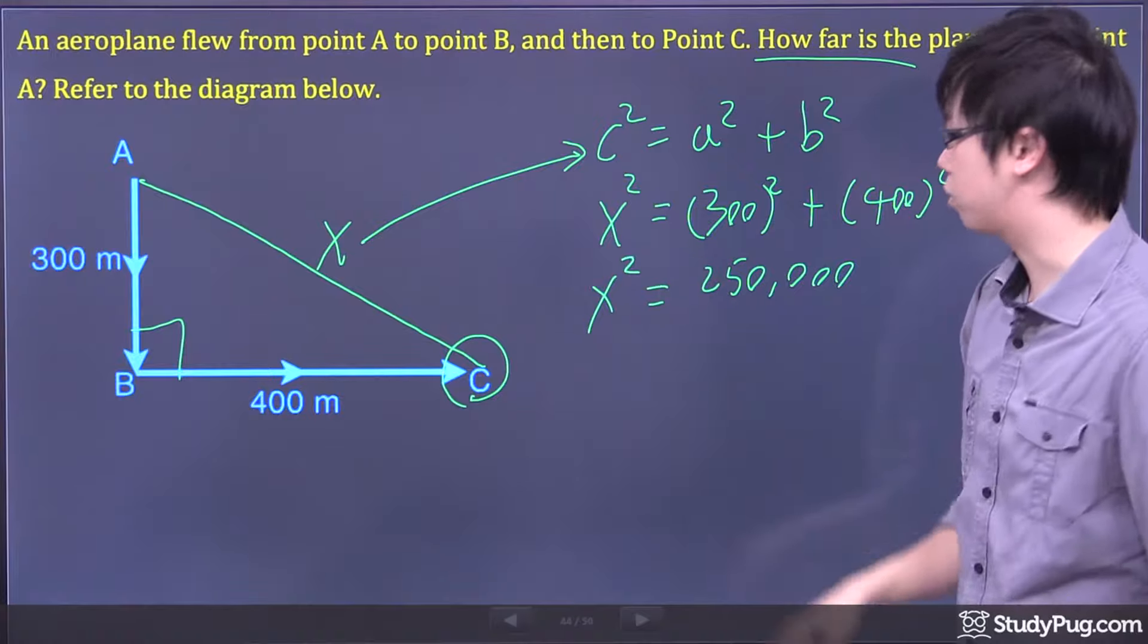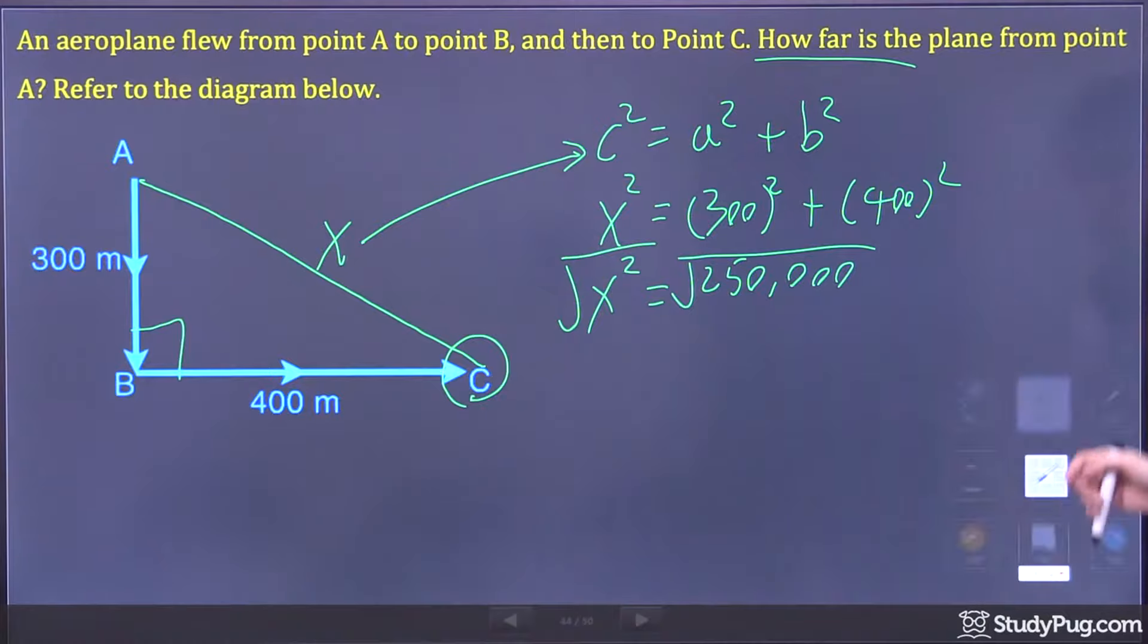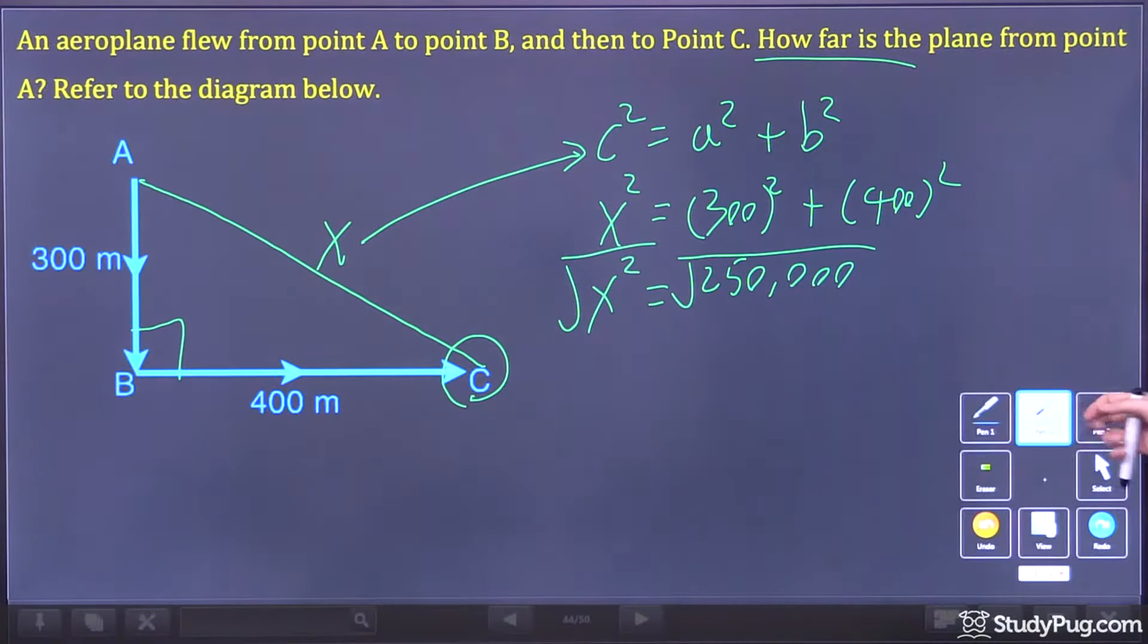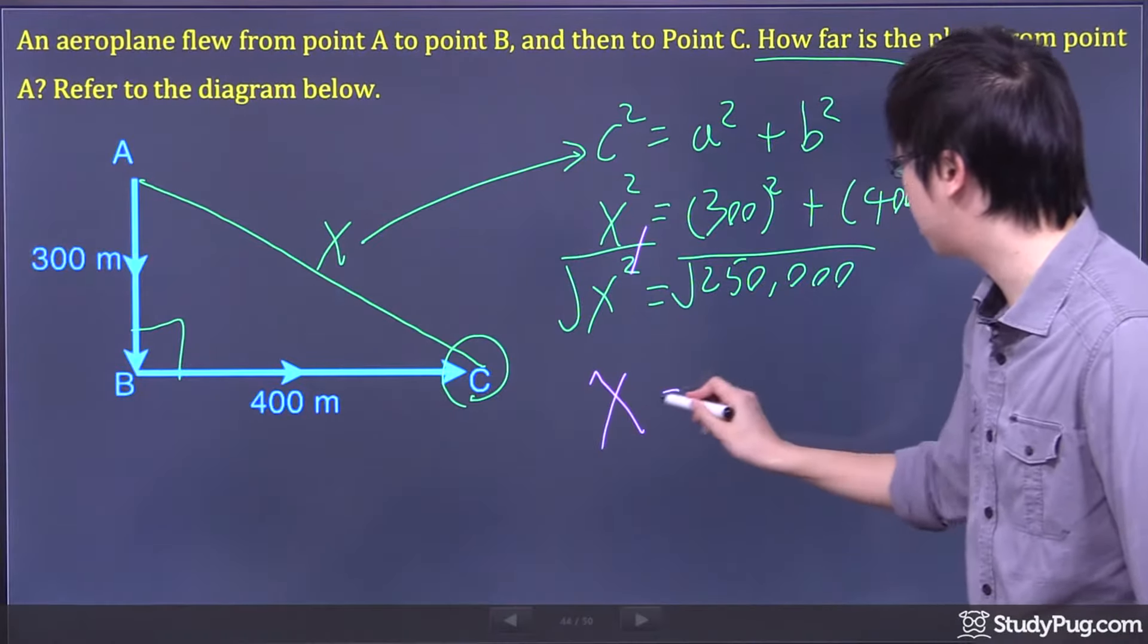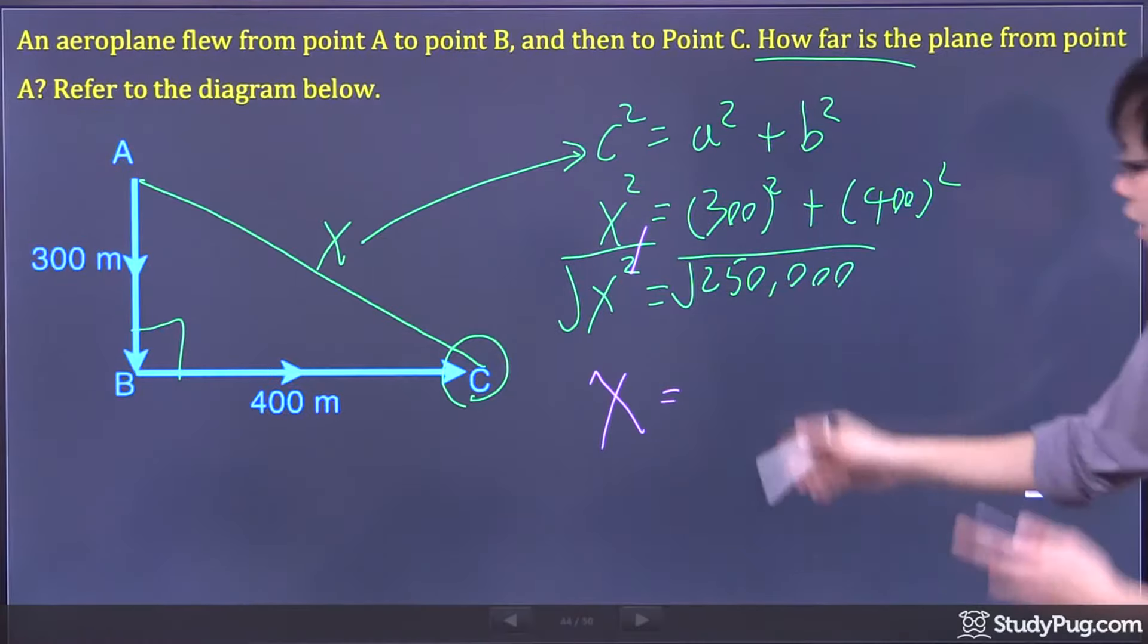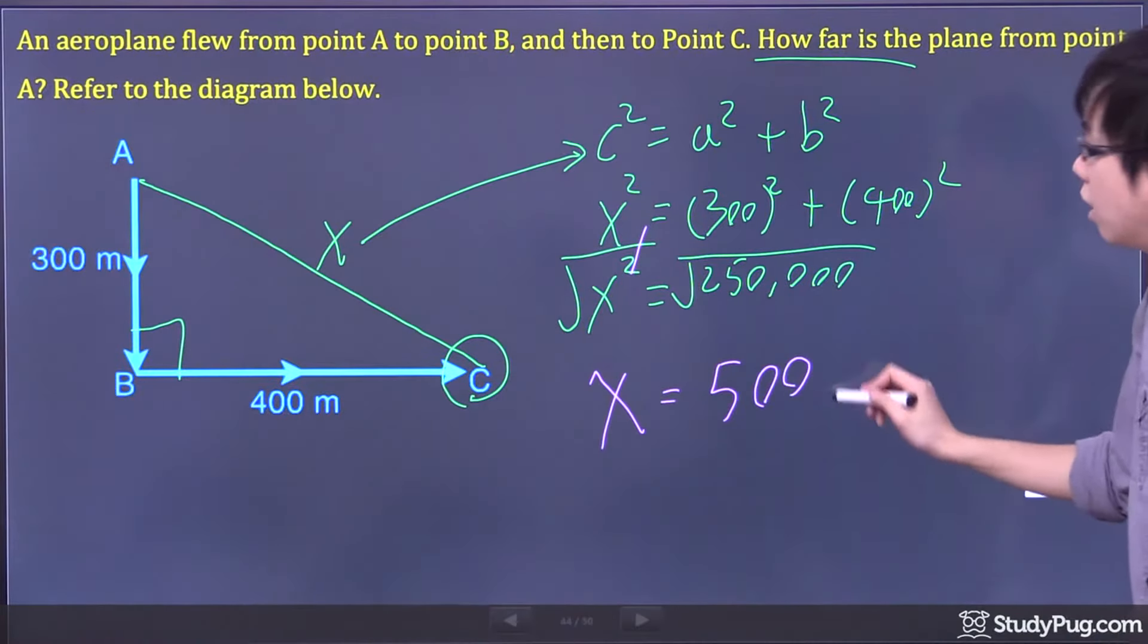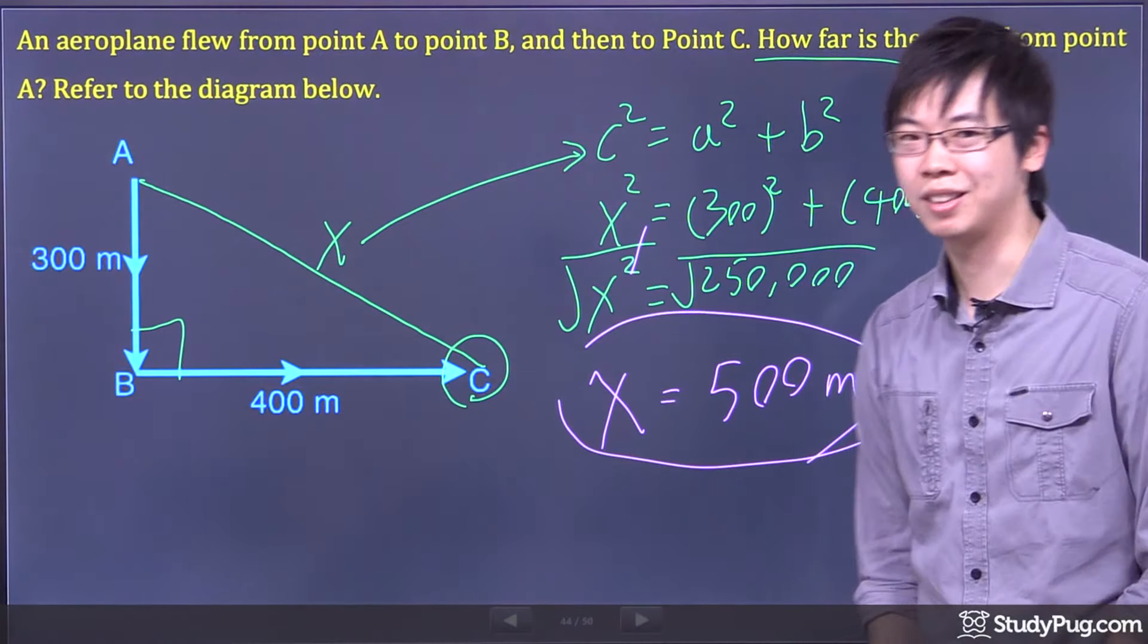And my X squared is still missing. So to figure out the X, I would square root both sides. Why do I do that? Because it allows me to cancel the square sign right there. So I end up with just X, and I just have to square root my 250,000. Then I got myself 500. And it looks like it's meters. And that's the answer for this question. Thanks for watching.